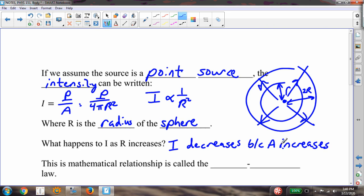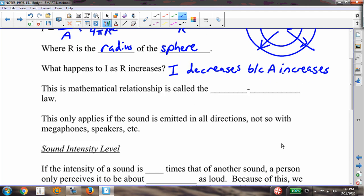And this relationship, the mathematical relationship, is called the inverse square law. We've seen this before a bunch of times. In fact, the inverse square law is very common in nature. And it's common in nature because spherical symmetry is common in nature.